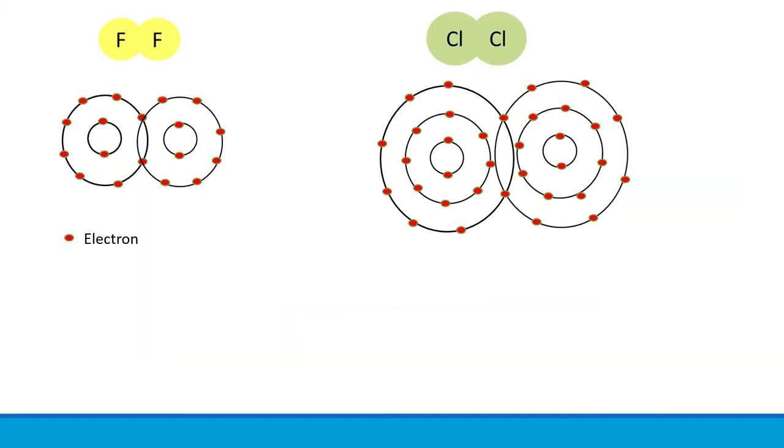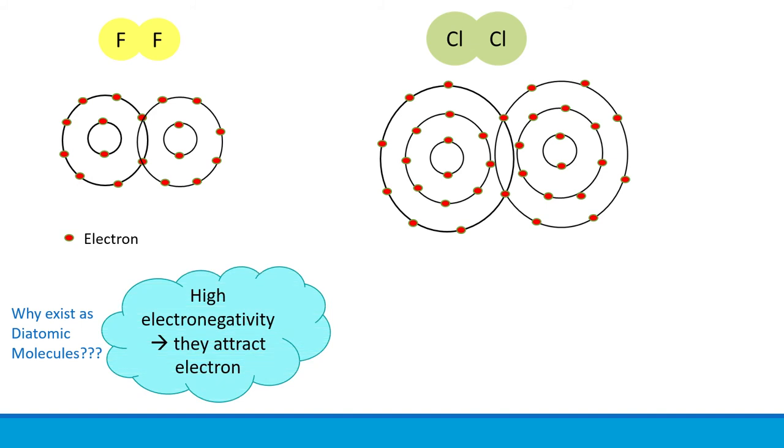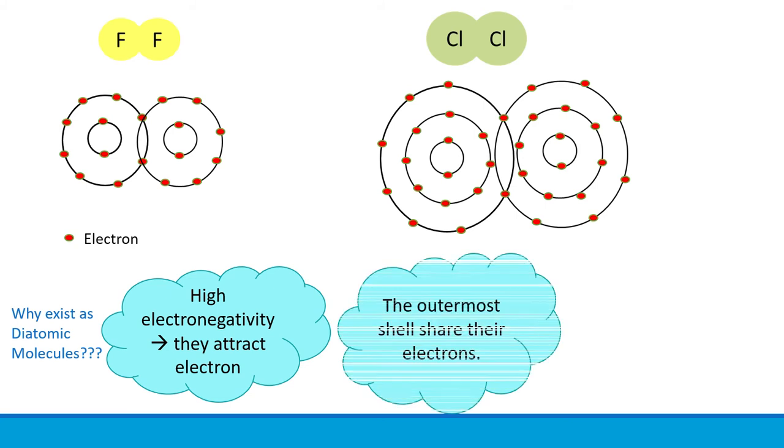The halogen group elements exist as diatomic molecules at room temperature. This means two atoms are required to make them exist in stable condition at room temperature. So why do they exist as diatomic molecules? Well, this is because halogen elements are highly electronegative, meaning they easily attract electrons. Hence, the outermost shell of halogen elements easily shares their valence electron with another identical halogen atom.